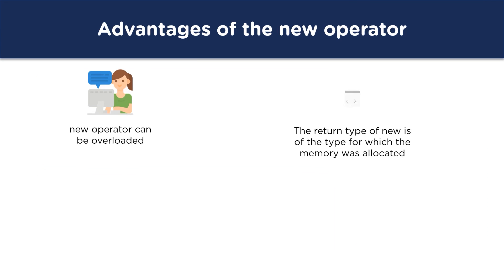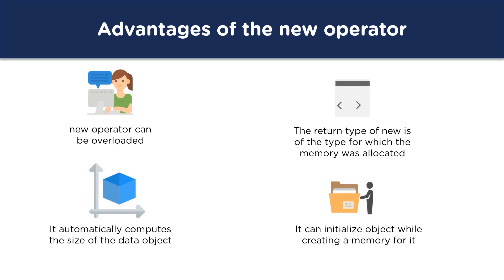Moving on to the advantages of the new operator: the new operator and delete operator can be overloaded, unlike the malloc function. Next, the return type of the new operator is of the same type for which the memory was allocated, so we don't need typecasting. Third, the new operator automatically computes the size of the data object, so we don't need the sizeof operator. Finally, the new operator allows us to initialize an object while creating memory space for it.